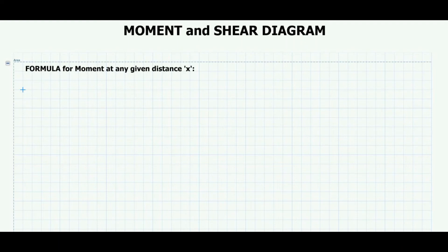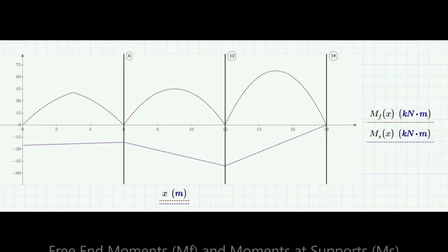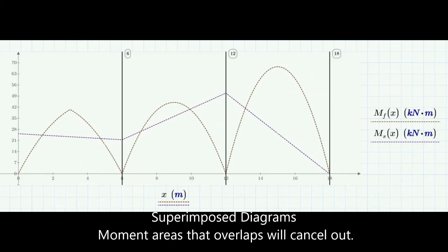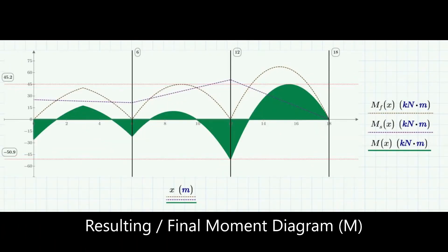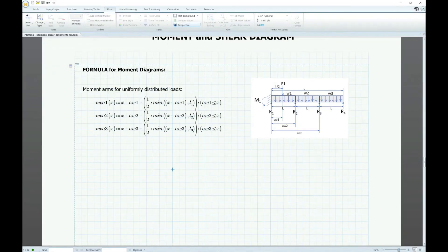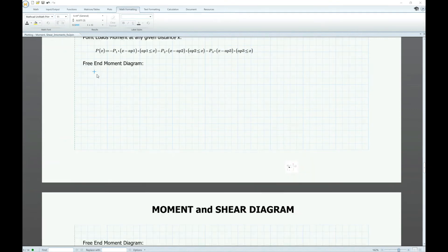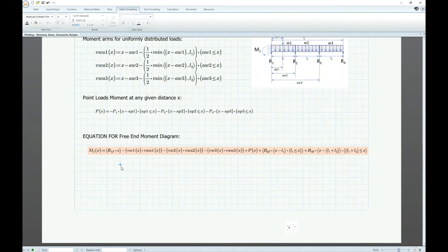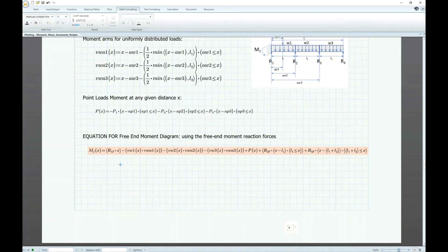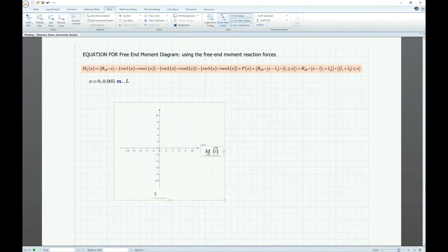For the moment diagram, I will define two equations: one for the free end moment diagram, and one for the moments at supports diagram. I will then superimpose these two diagrams, and the moment areas where they overlap will cancel out. The areas that do not cancel out will be the remaining moment, hence the final moment diagram.